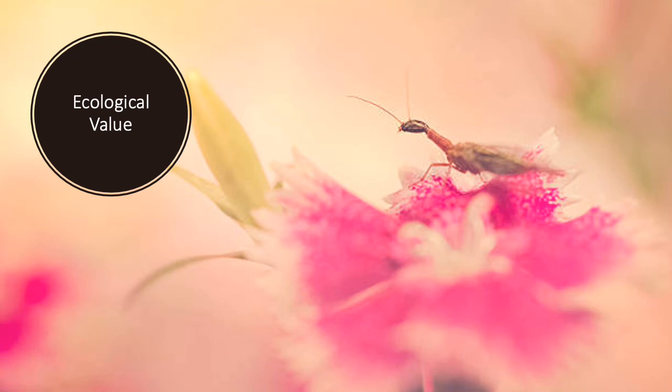Let's talk about their ecological value. If you were a mite or an aphid, this photo would be the stuff of nightmares. Snake flies are important and voracious predators of aphids and mites, and they occasionally also eat pollen, but these insects are mostly carnivorous. As larvae, they're also very effective predators, consuming small invertebrates and arthropod eggs.